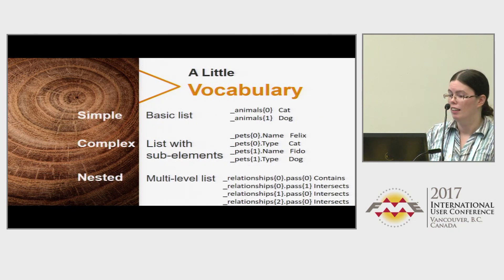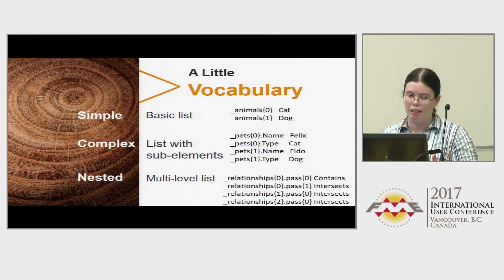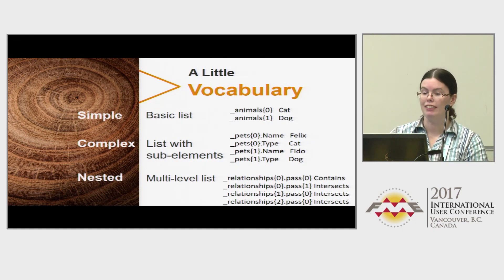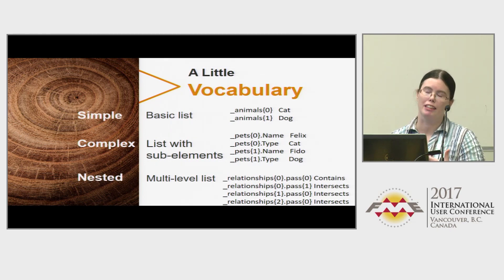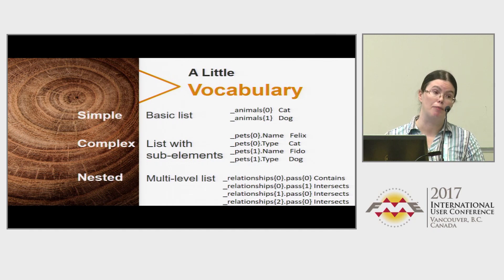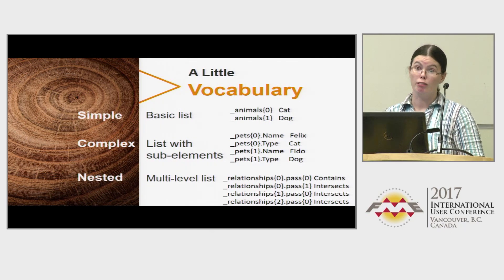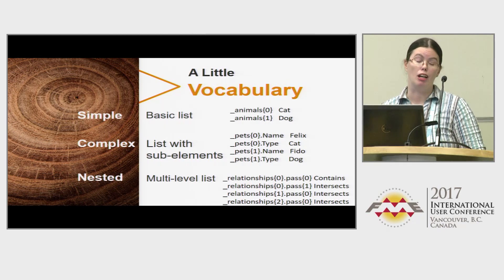A little vocabulary: there are three types of lists in FME. We have the simple list, which is a list name with an index storing a value. We have the complex list, which is a list containing sub-elements — this is one you'll see most often produced by a transformer, where you have the list name, the index, and then another attribute. Here I've got both name and type as sub-elements on the pets list. And then you can have nested lists where one of those sub-elements is itself a list, and you can even get to nested complex lists.